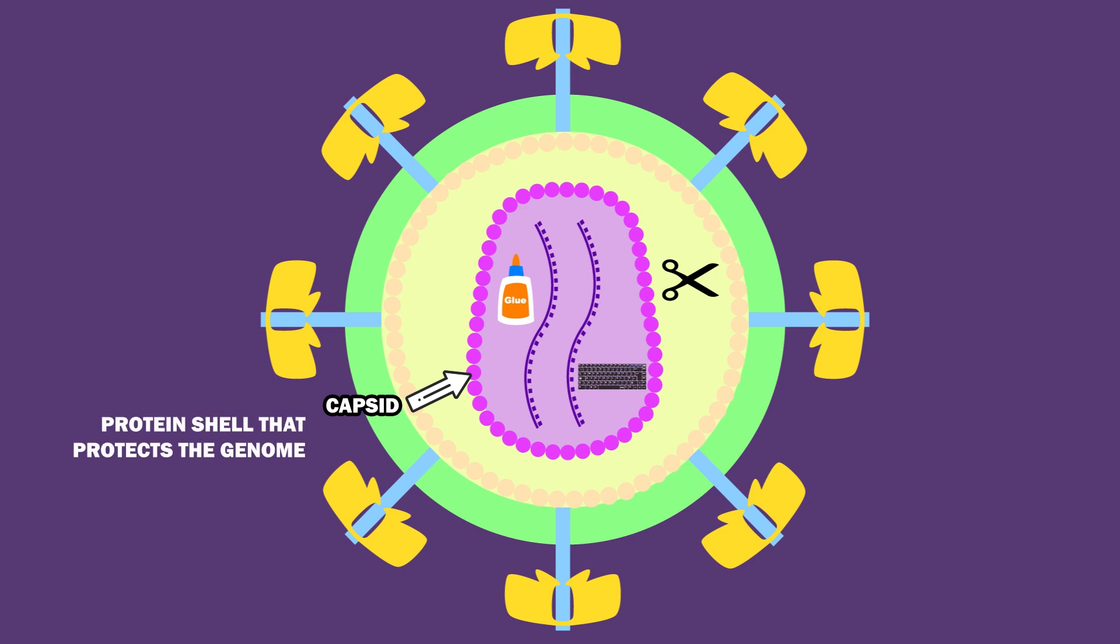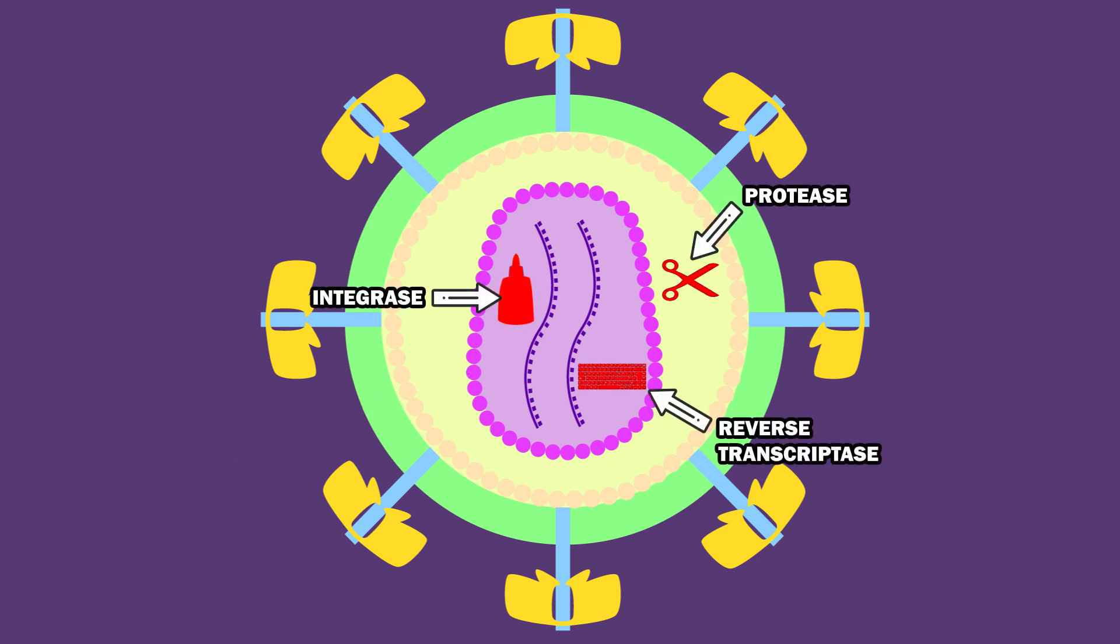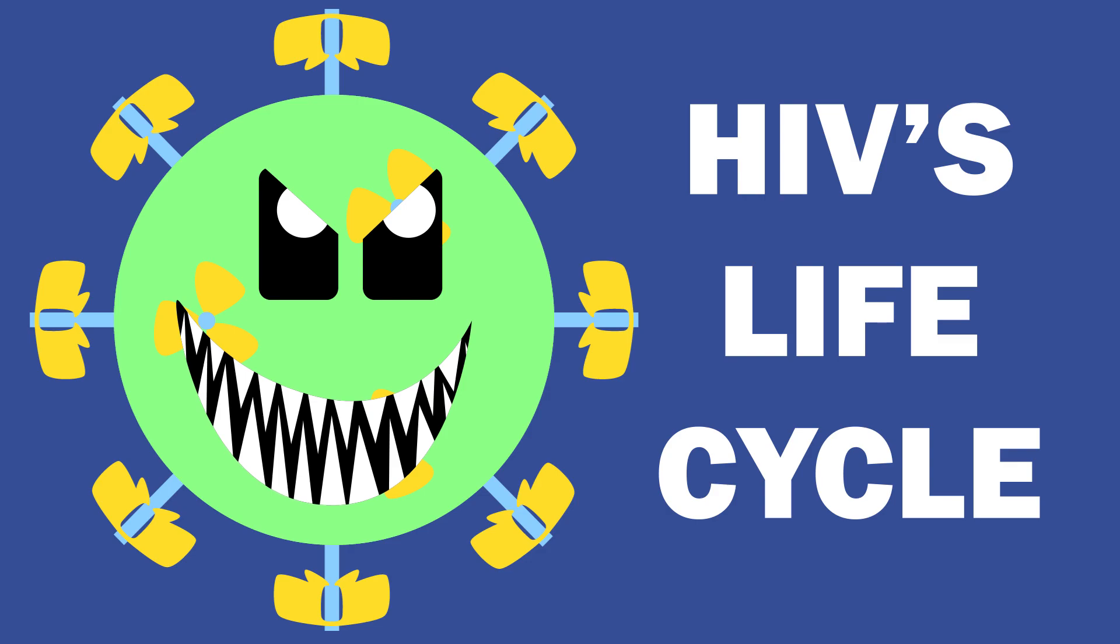The capsid is a protein shell that protects the genome. Reverse transcriptase, integrase, and protease get to work once HIV is inside a host cell. First, let's follow HIV's life cycle.